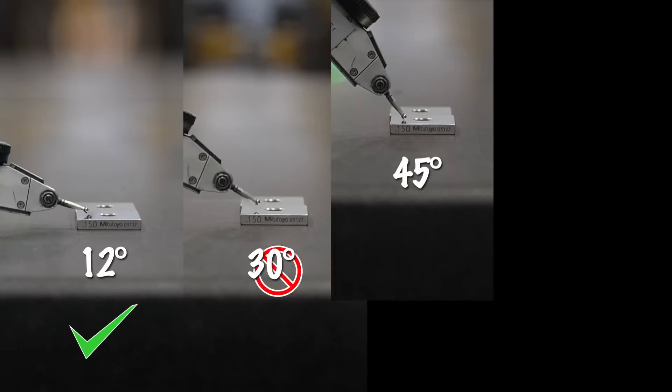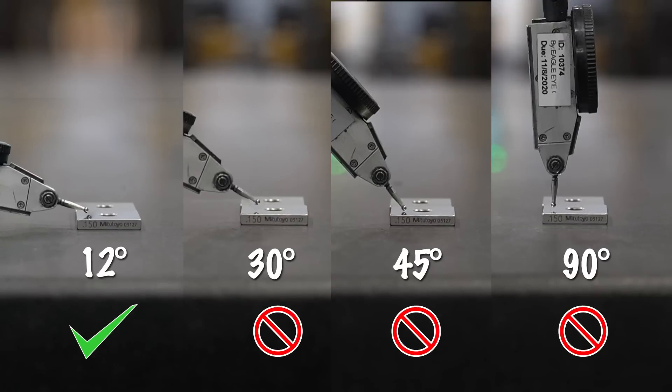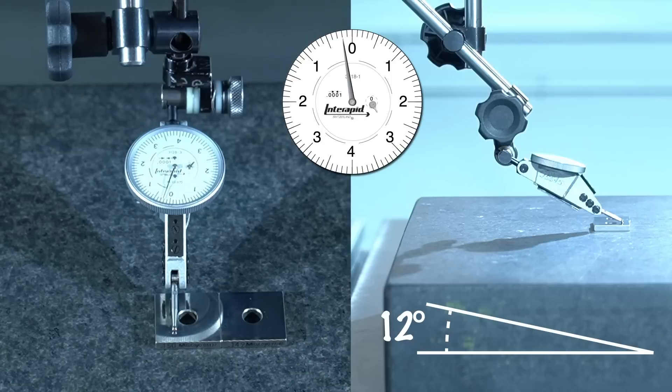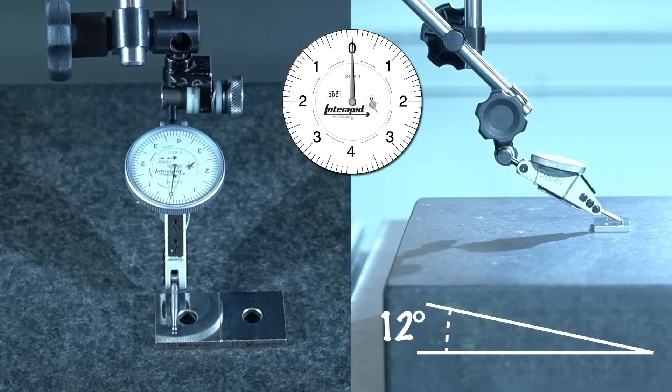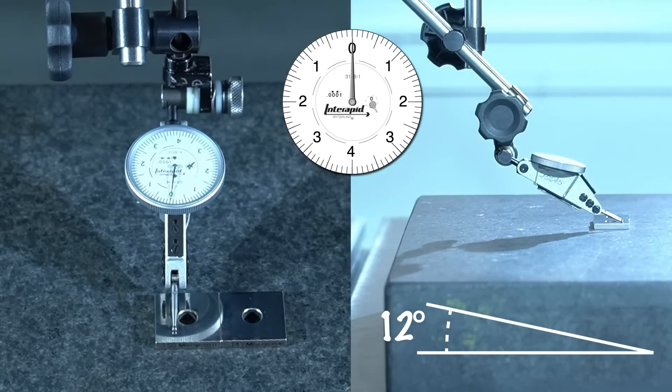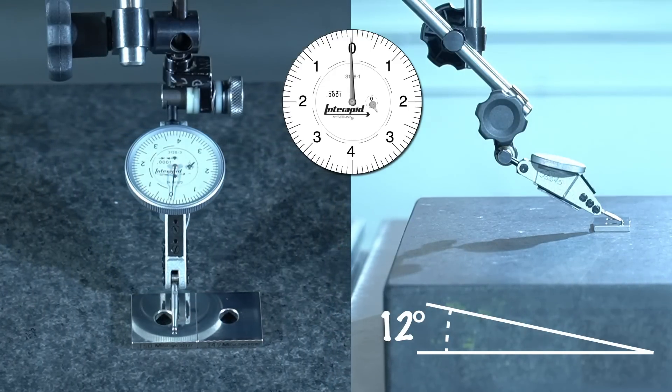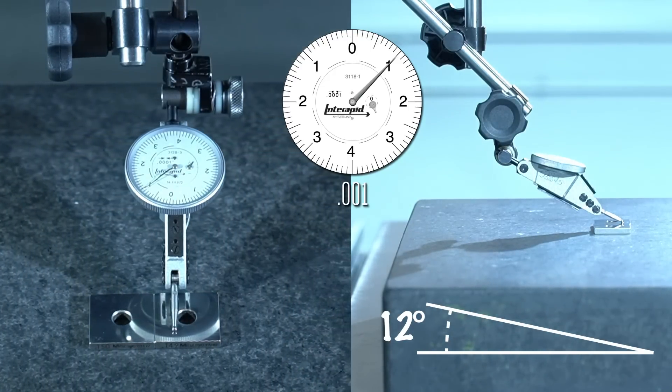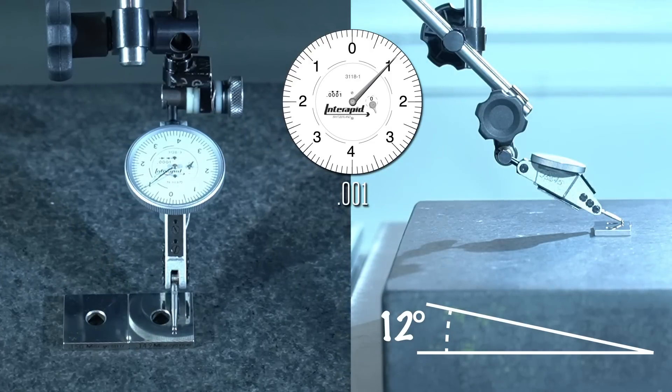To see the importance of setting this angle correctly, let's measure the same surface at different stylus angles. First, we'll set our indicator to 12 degrees, set it to 0, our reference position, on this accurate 0.15 inch gauge block. Now we'll move the indicator to this 0.149 inch gauge block. As you can see, the dial moved by one mark or a thou. As we know the height of the two blocks, we know that this is an accurate measurement.